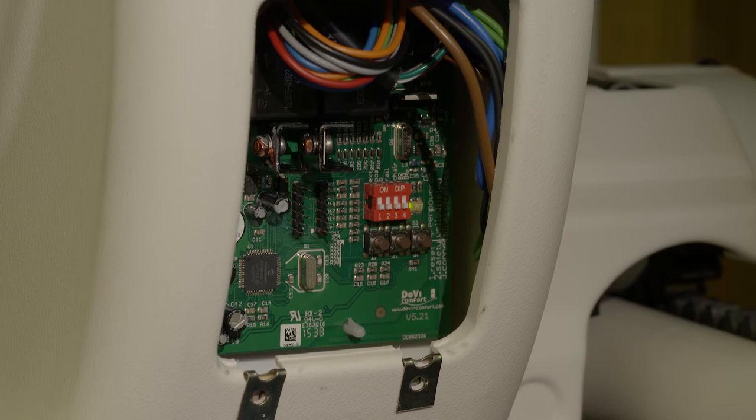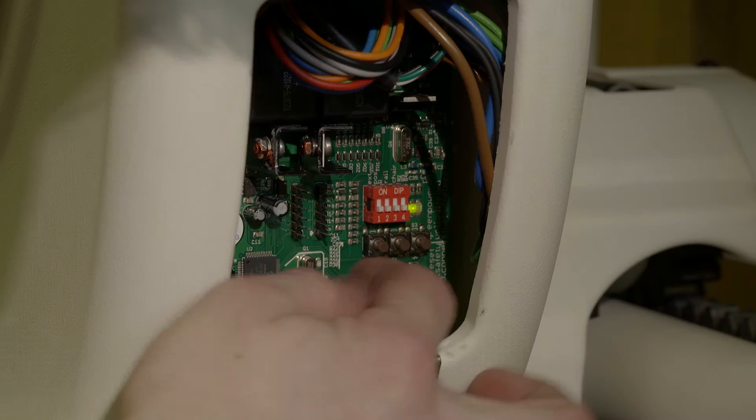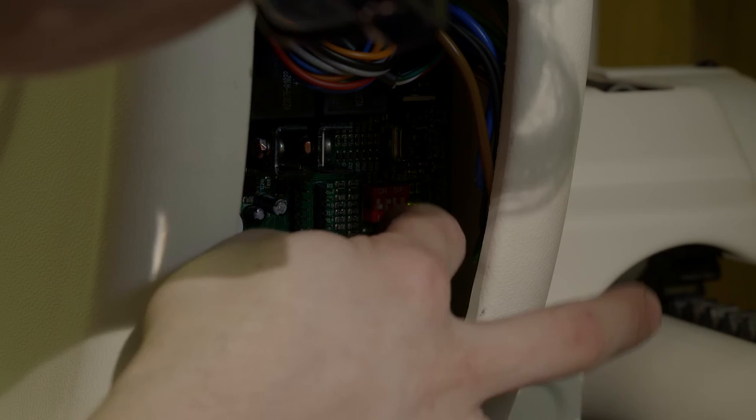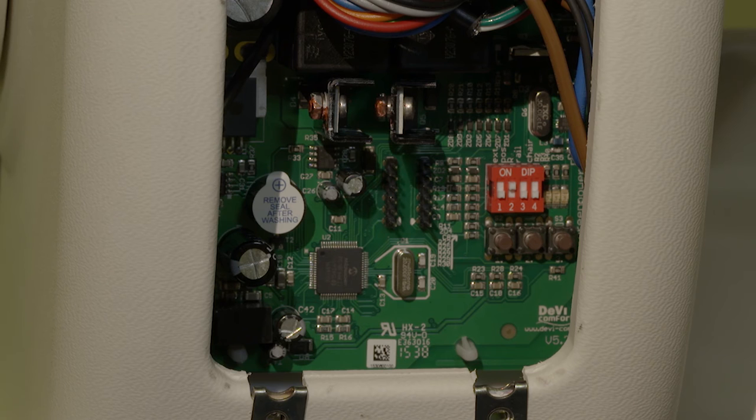To begin programming, start with calibrating the stairlift for either a left or right installation. Open the access panel on the right side of the carriage to access the main board. Then turn off the unit. Dip switch number 2 should be in the on position for a right-hand installation or off for a left-hand installation. All other dip switches should be in the off position.